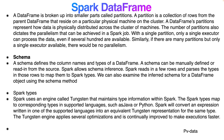A DataFrame is broken into smaller parts called partitions. A partition is a collection of rows from the parent DataFrame that may reside on a particular physical machine in the cluster. The number of partitions determines the degree of parallelism. With a single partition, only one executor can process data even if hundreds are available. Conversely, with many partitions but only one executor, there is also no parallelism — we need to balance both.